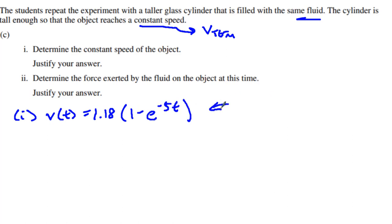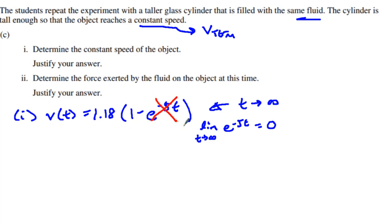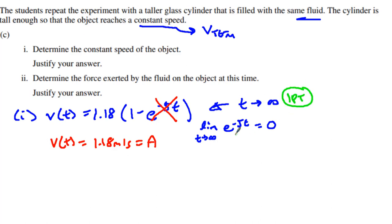What do we know as it's going? The time is approaching infinity. As time approaches infinity, e^(−5t) approaches 0 — the limit as t→∞ of e^(−5t) equals 0 — which means the entire exponential term becomes 0. So the terminal velocity is 1.18 meters per second, or what you would call variable A.